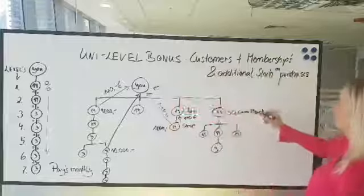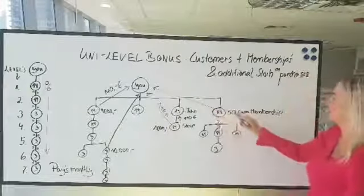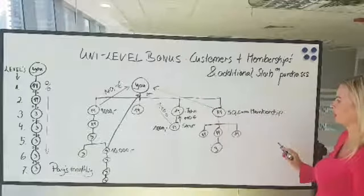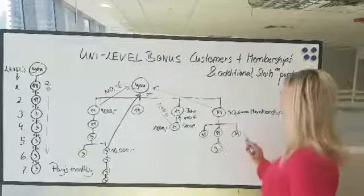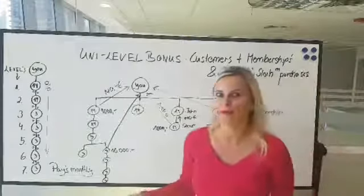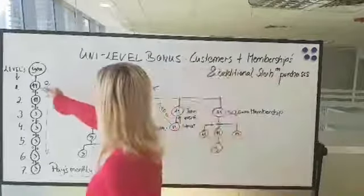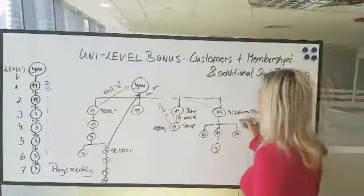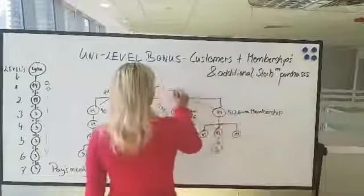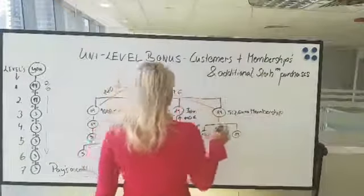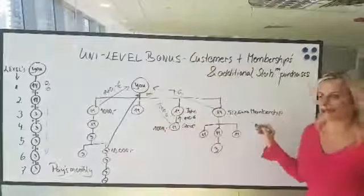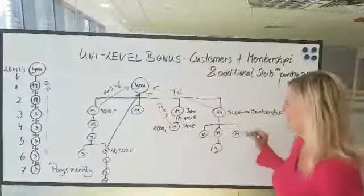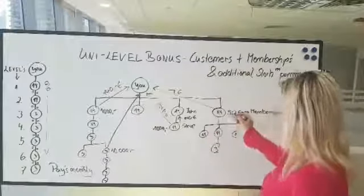Let's look at another example here. Here you have another person directly and he buys the 50 euro membership. What do you get? Well again, 14%, that means from the 50 euro you would actually get 7 euros from this 50 euro membership purchase of store.